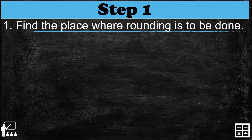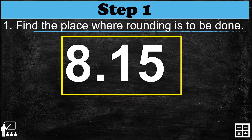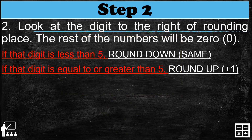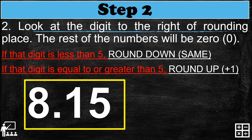Now example number two: 8.15, or eight and fifteen hundredths. Again, we look at the tenths place value digit, which is one. Step two: look at the digit to the right of the rounding place. The number to the right of the rounding place is five, and number five is equal to five, so we round up.